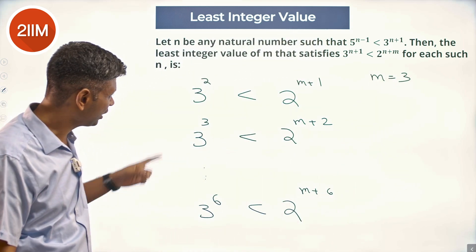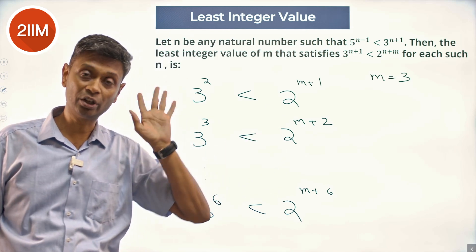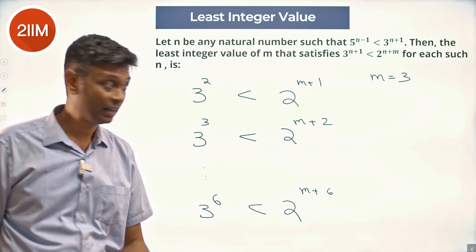m is 3. 2^4. 3^3 is 27, this should be 32, so m+2 is 5, m is 3.